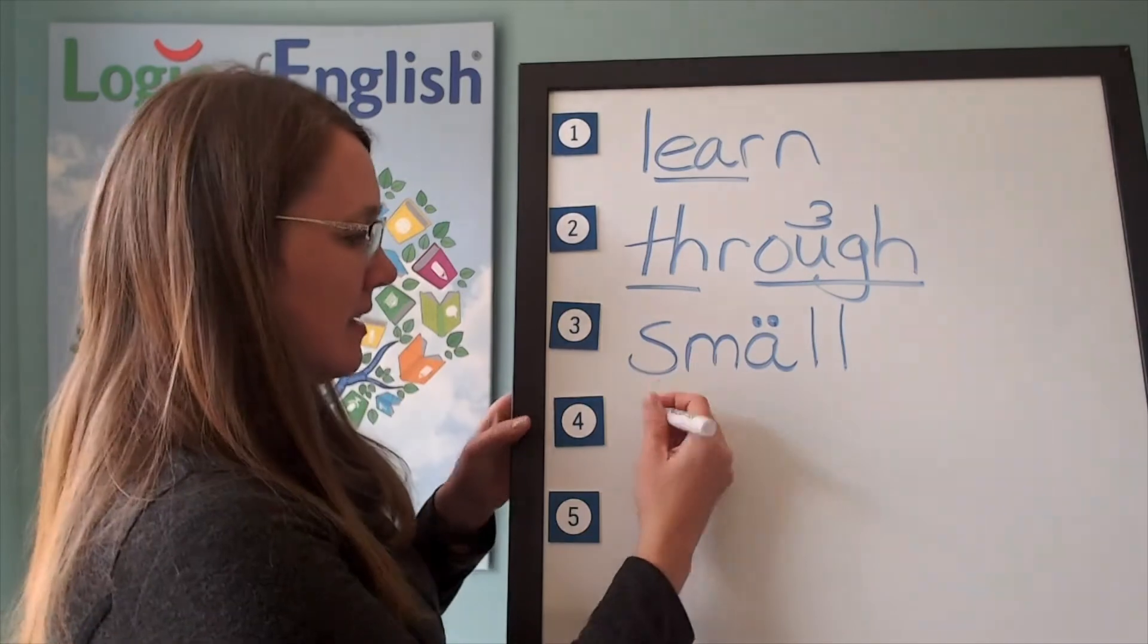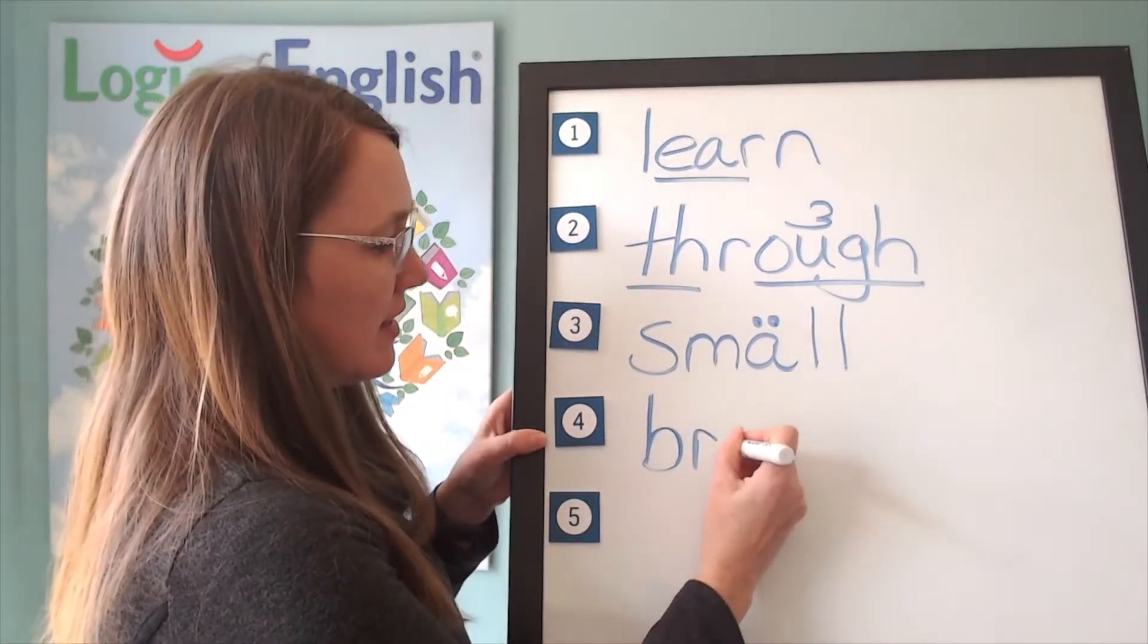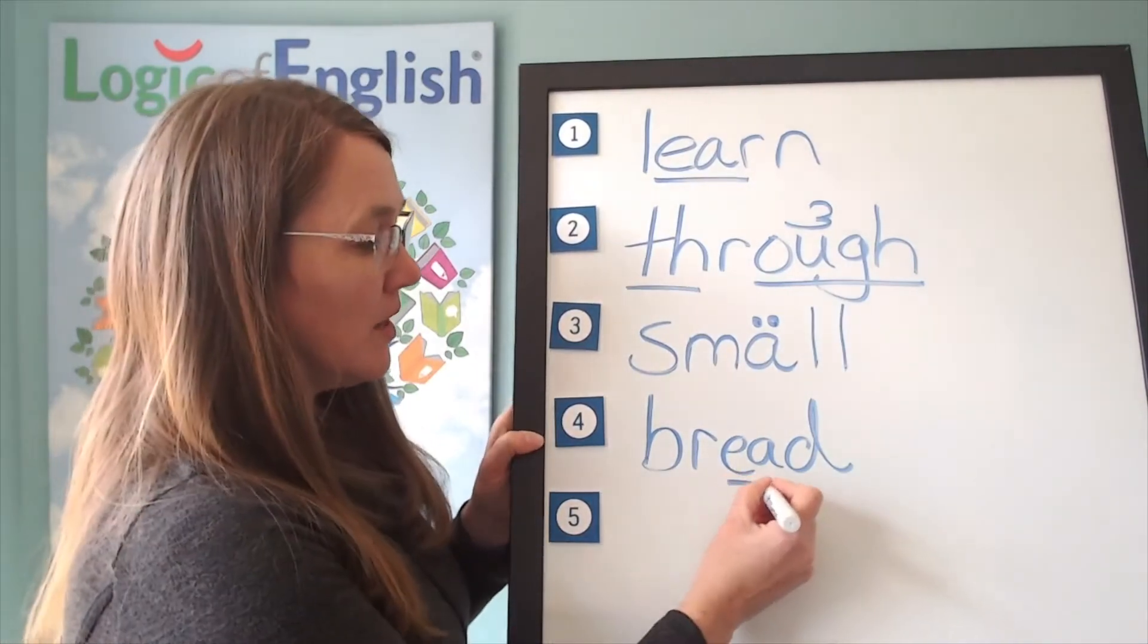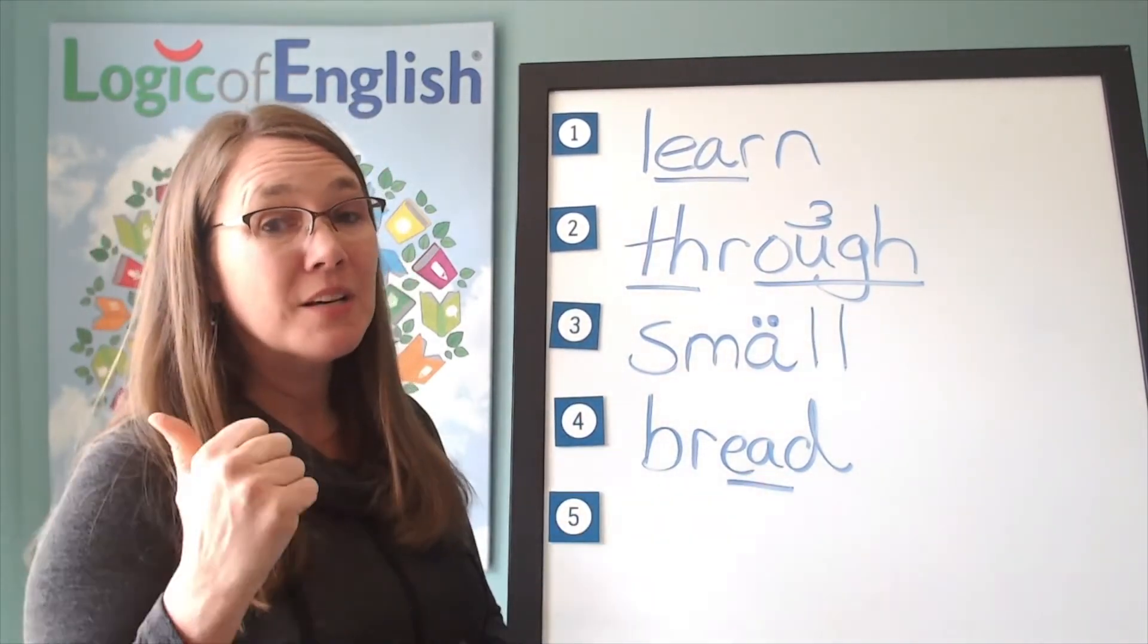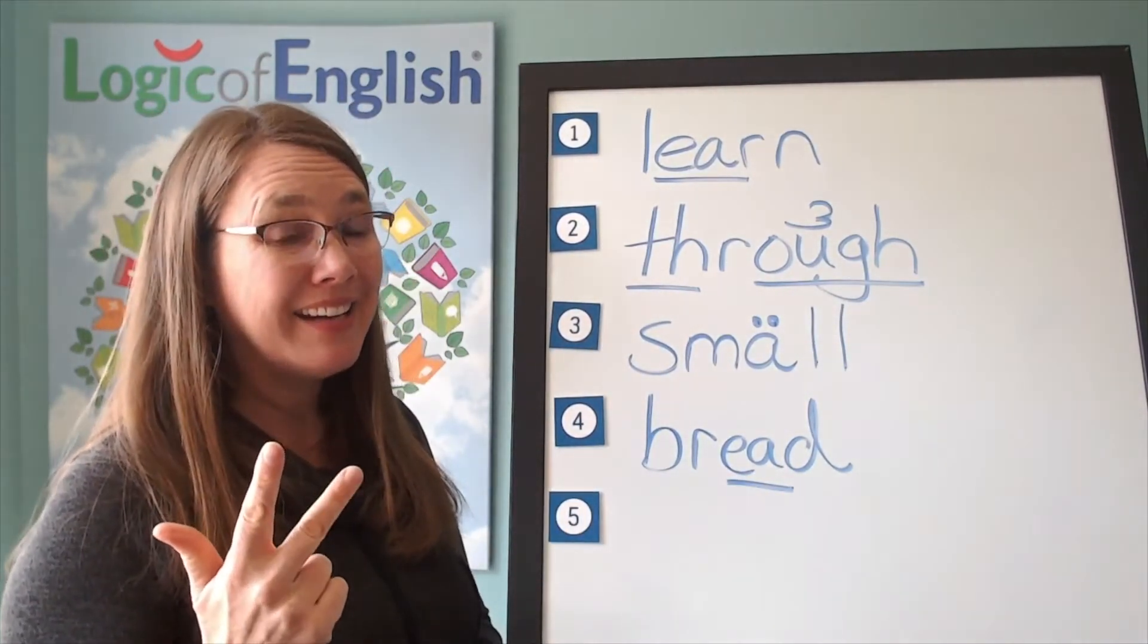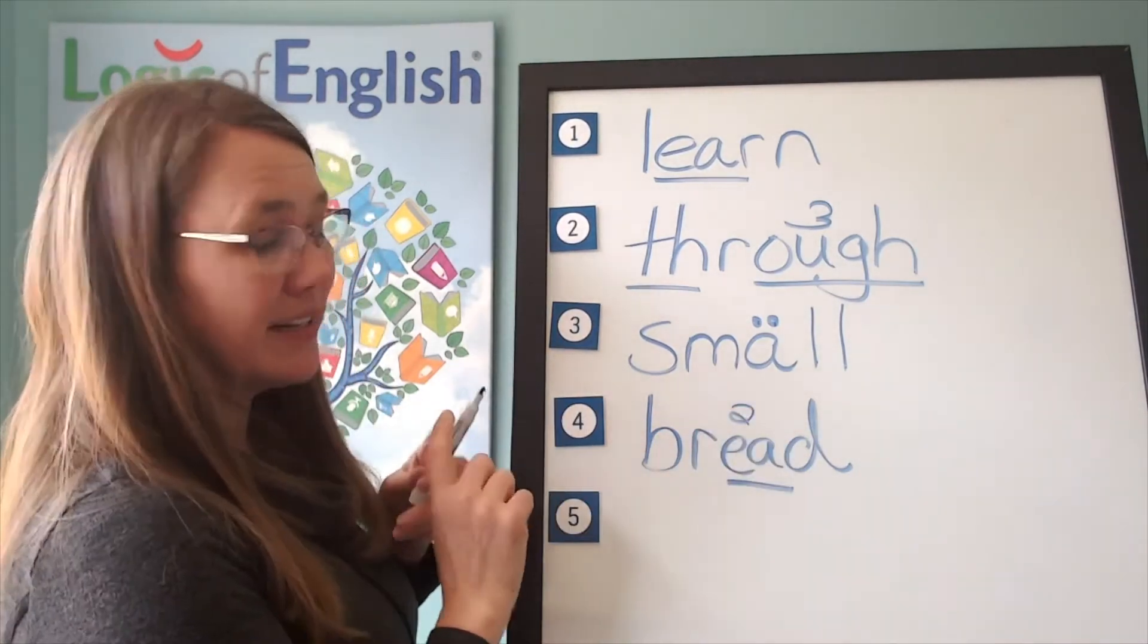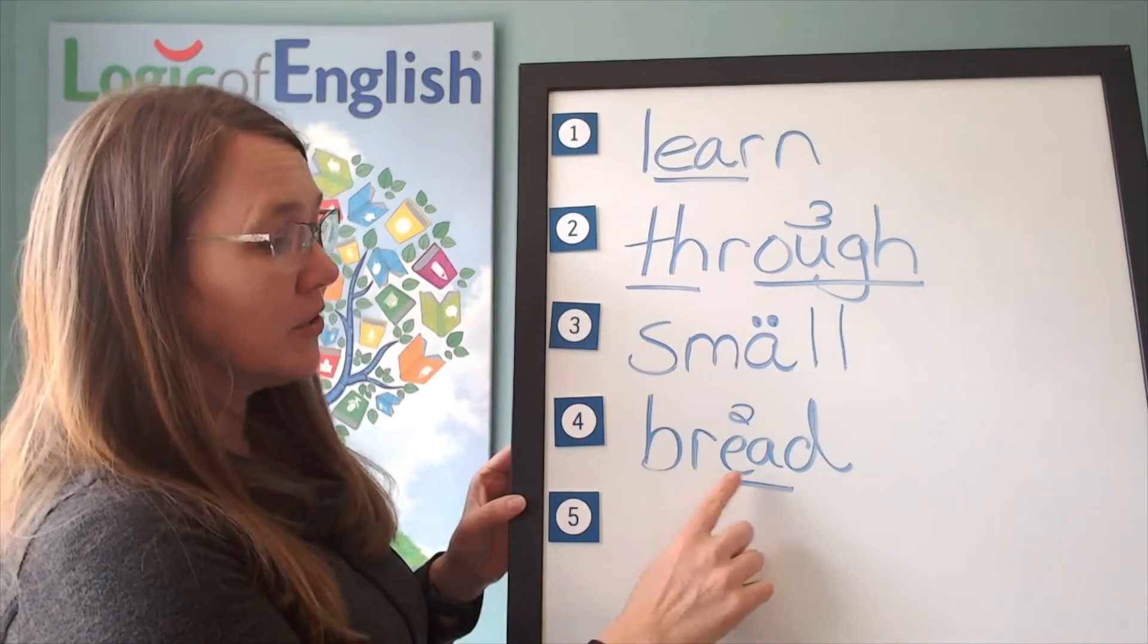Now help me to write it. B-r-e-d. And how will we mark it? We'll underline the E. What sound of E-A-A is this? You're right. It's the second sound so we'll put a two over it. Let's read it. B-r-e-d. Bread.